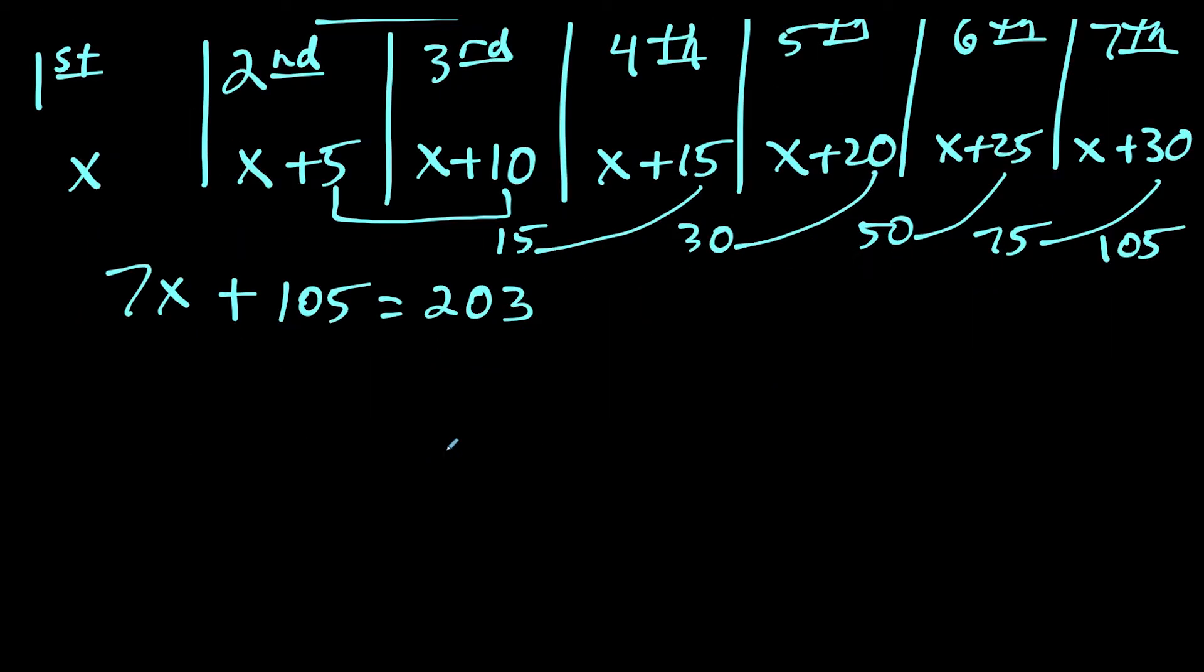Now we're going to solve for x, but we have to be careful here. Once we solve for x, we're going to subtract 105. If we do the subtraction, this is going to cancel and we have seven x equals...